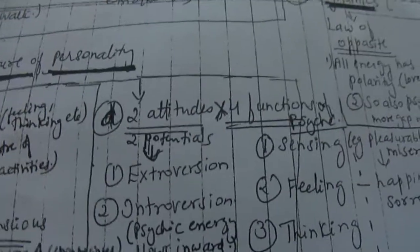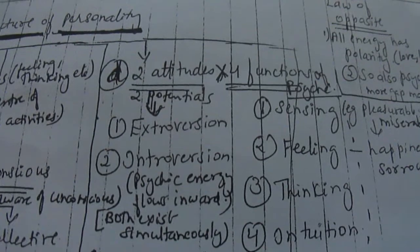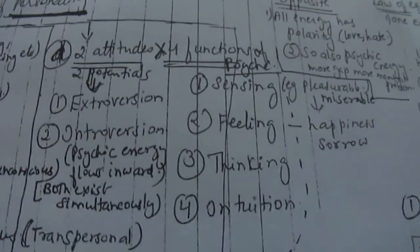Then there were two attitudes and four functions: extroversion, introversion, sensing, feeling, thinking, and intuition.